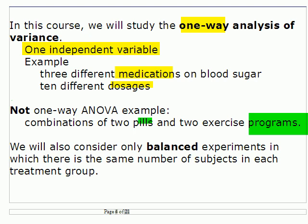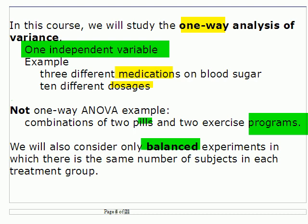We're only going to consider cases of one independent variable. We'll also be using balanced experiments, in which there's the same number of subjects in each treatment group. That makes subsequent analysis that occurs after the analysis of variance much easier.